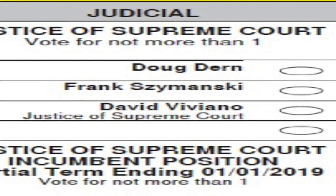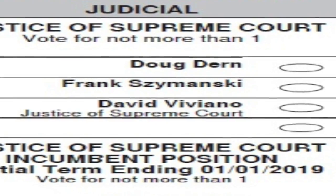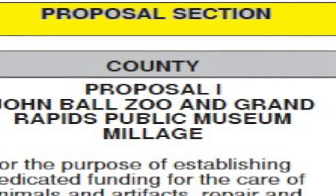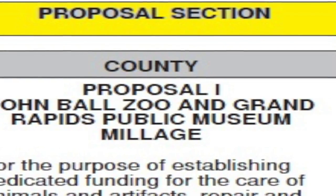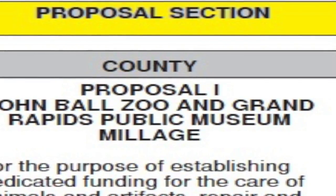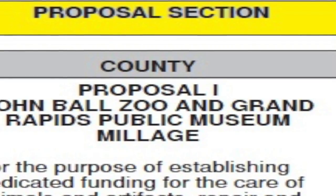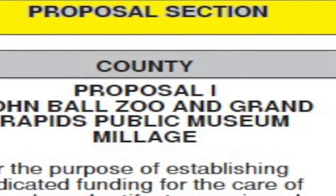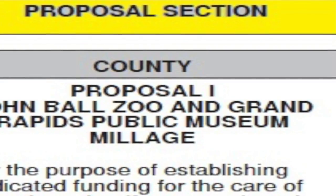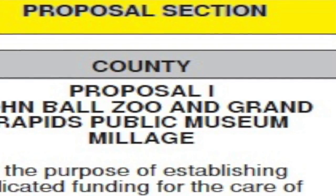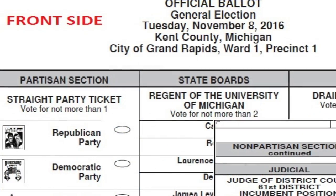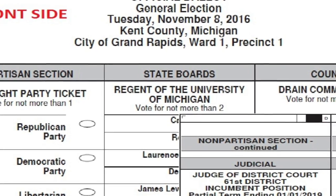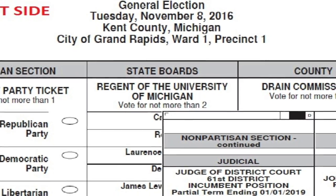Thirdly, we have the proposal section. This section of the ballot contains local proposals that do not have a political party affiliation and they do require a yes or no vote. I would also like to point out that this ballot for the November general election is a two-sided ballot. Please ensure to review both sides of that ballot in order to properly cast a vote for the offices or proposals of your choosing.